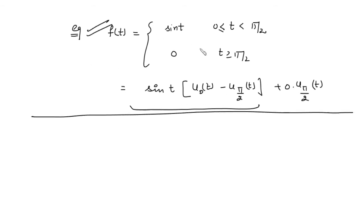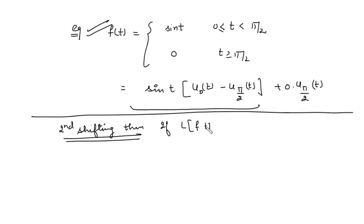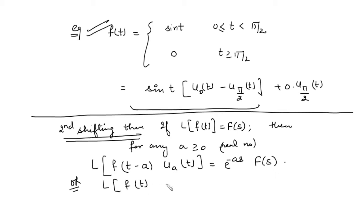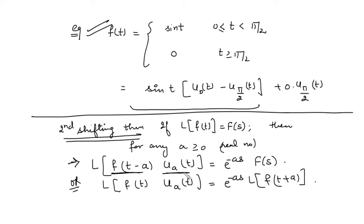Now, how do we find the Laplace transform of such functions? For this we use the Second Shifting Theorem. The theorem states: if the Laplace transform of f(t) is F(s), then for any real number a ≥ 0, the Laplace transform of f(t-a)·u(t-a) is e^(-as)·F(s).